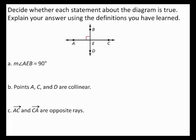Decide whether each statement about the diagram is true. In part A, to determine whether the measure of angle AEB equals 90 degrees is true, first notice the right angle symbol in the diagram. This right angle symbol indicates that angle AEB is a right angle. By the definition of a right angle, its measure is 90 degrees. Therefore, this statement is true.